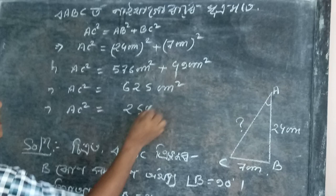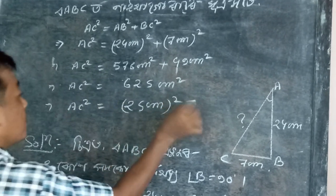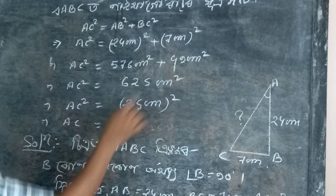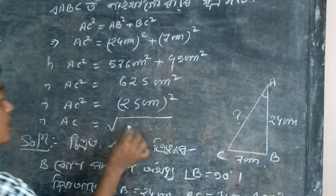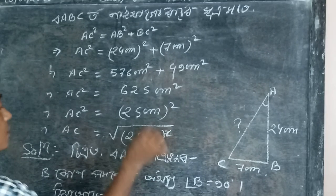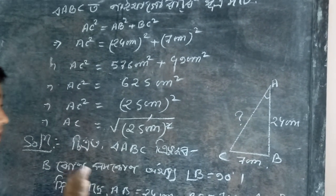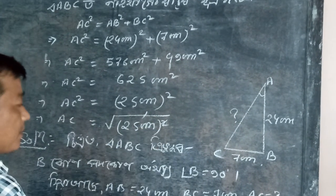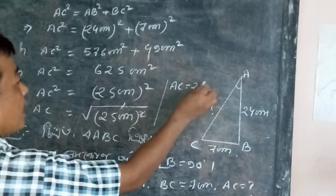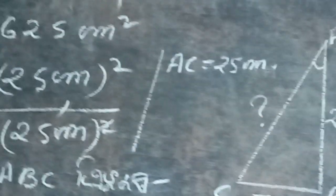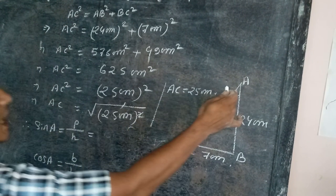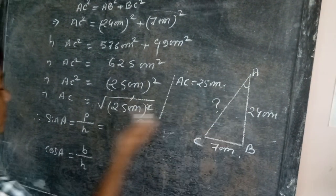AC squared equal to 625 cm squared. Taking the square root, AC equals 25 cm. The square root cancels, so AC equal to 25 centimeters.